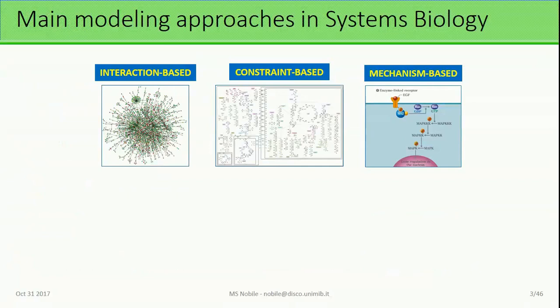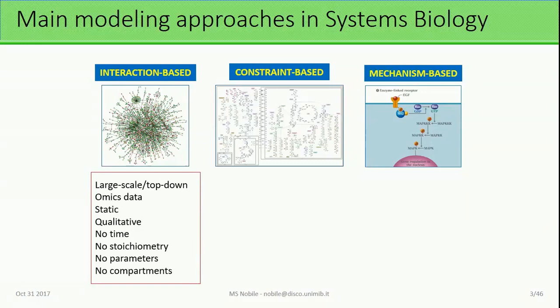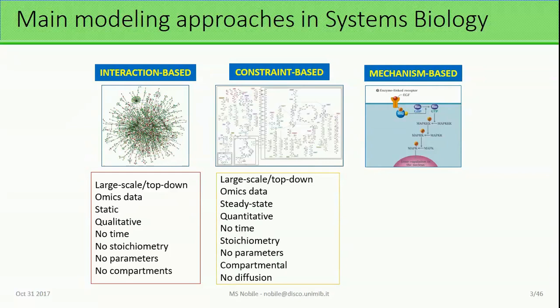There are three main modeling methodologies in Systems Biology. The first one is interaction-based modeling. In interaction-based modeling, we have a network, a graph, where the nodes are the proteins — the actors of the cell. Two nodes are connected by an edge when these two actors are known to interact. We can leverage omics data to automatically create these models at large scale, but the description is purely qualitative and static — there is no notion of time.